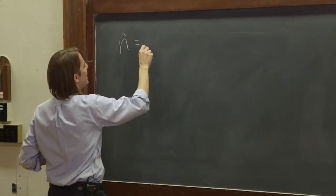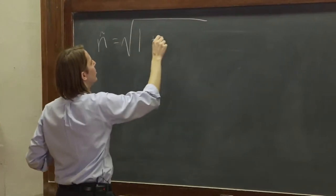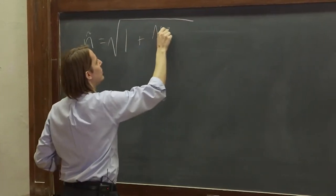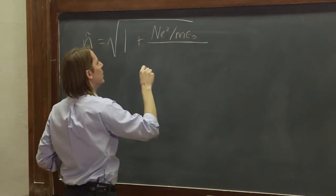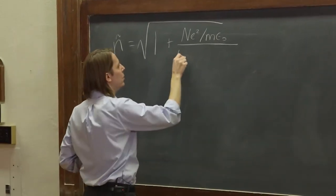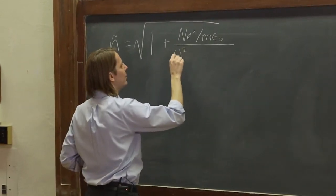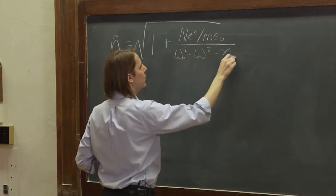We had a complex index of refraction equals the square root of 1 plus nE squared over the mass times epsilon naught over, and then we had omega naught squared minus omega squared minus gamma omega.